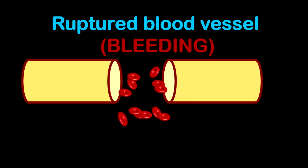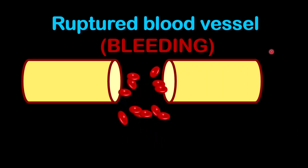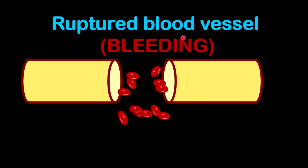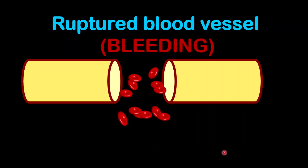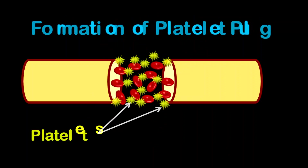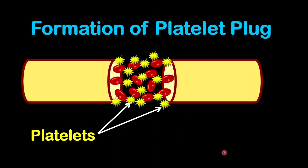This will be considered as the first stage in the mechanism of blood clotting. Once any blood vessel is being ruptured, bleeding will take place and blood will start to flow from your body. The next thing that will happen is that there will be a formation of a platelet plug.